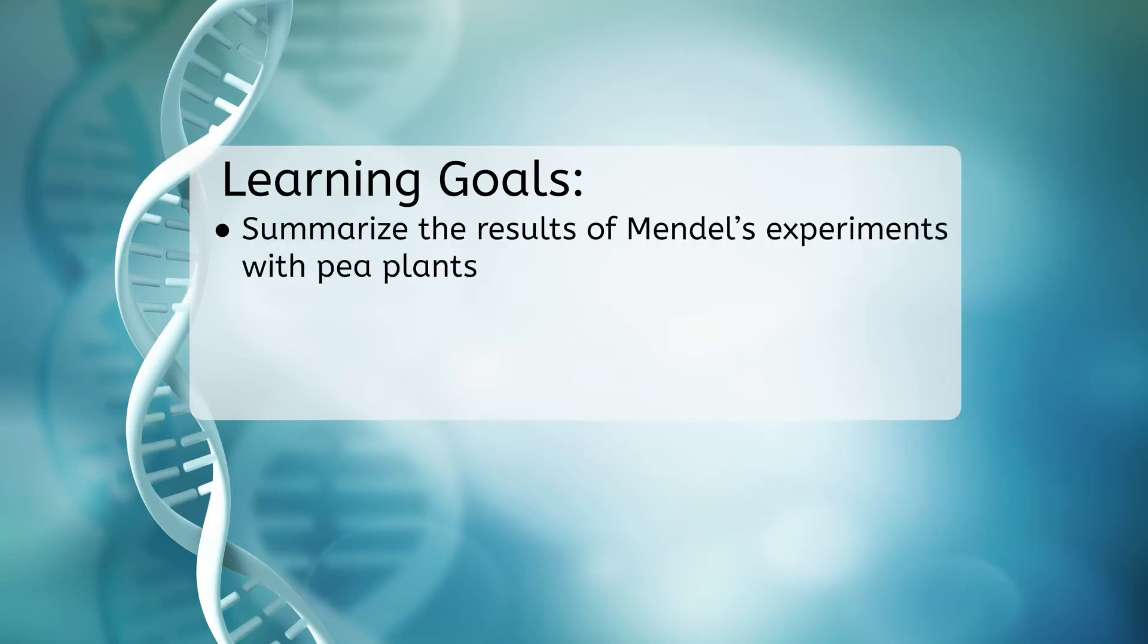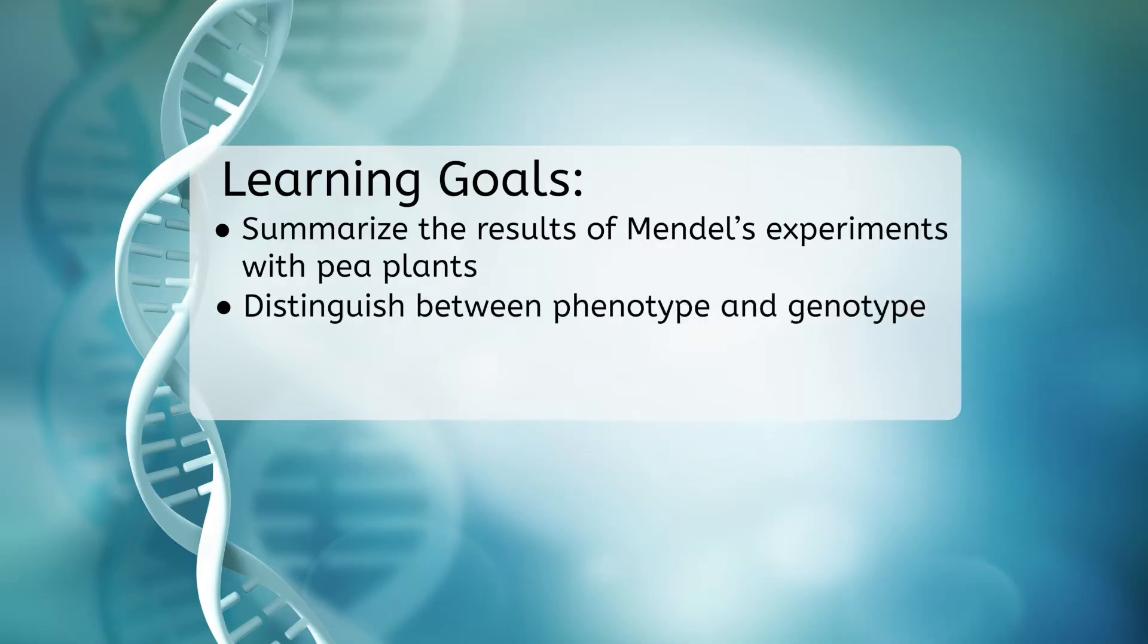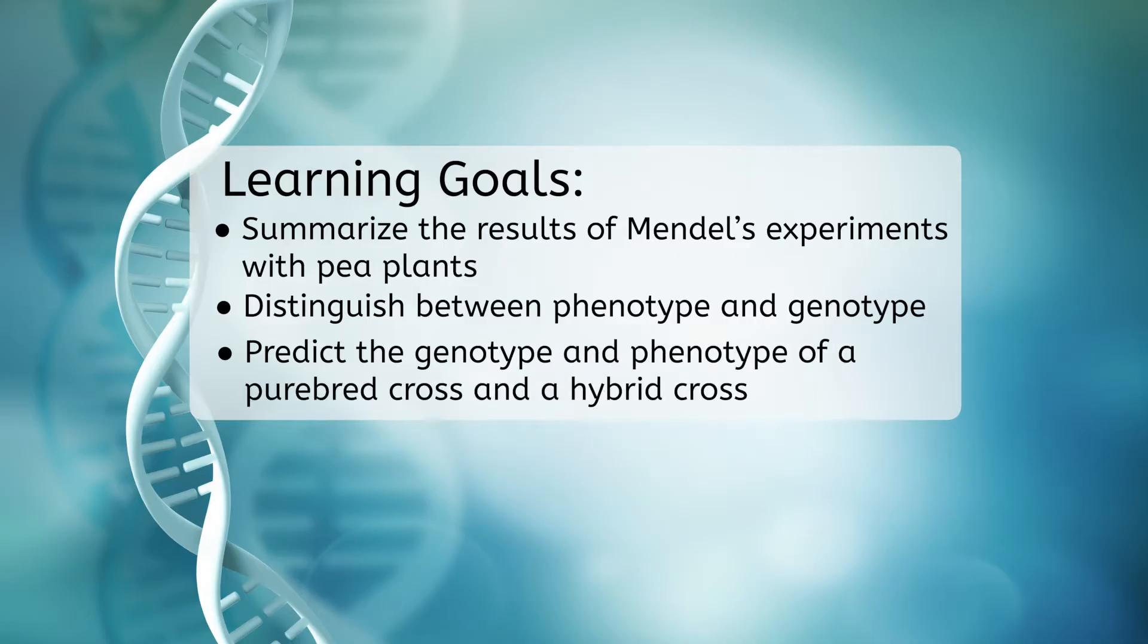Before we get started let's look at our goals for this lesson. By the end you'll be able to summarize the results of Mendel's experiments with pea plants, distinguish between phenotype and genotype, and predict the genotype and phenotype of a purebred cross and a hybrid cross.